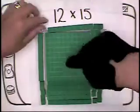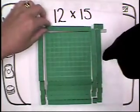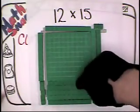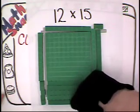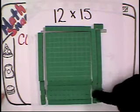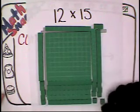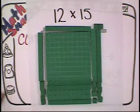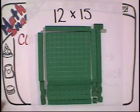And now the whole entire area is filled in. So 12 by 15 is 100, and 10, 20, 30, 40, 50, 60, 70, 170, and 10 more, 10 more, 180.